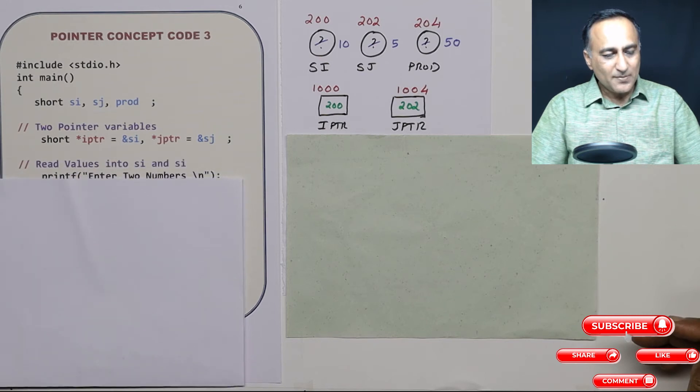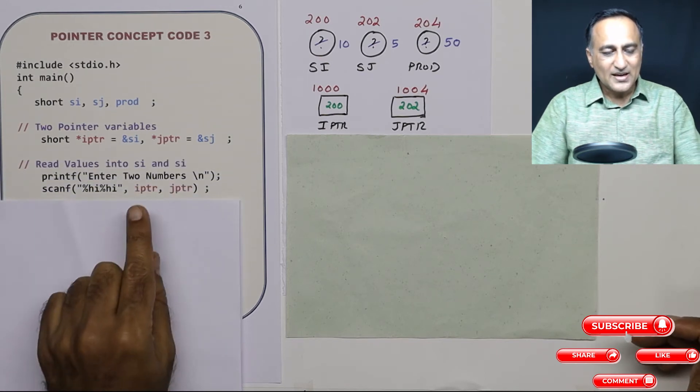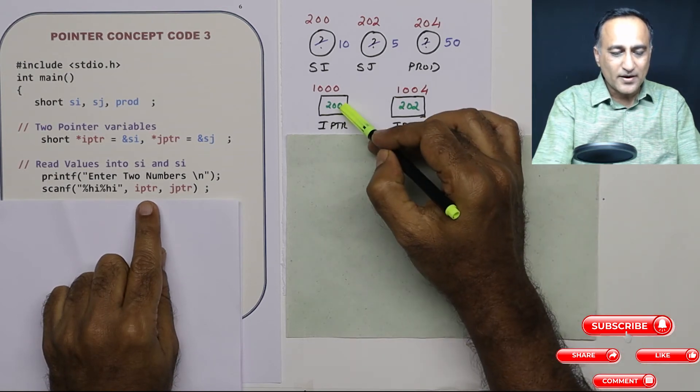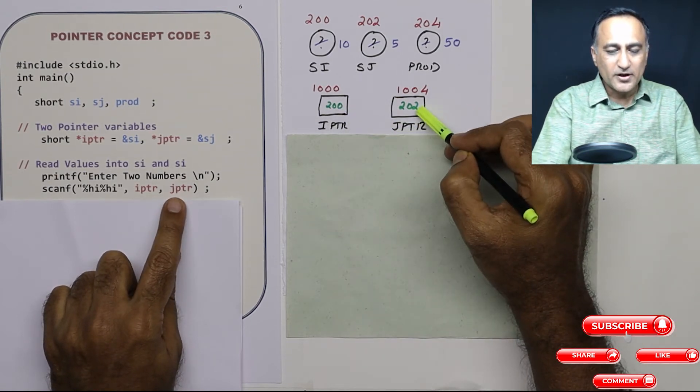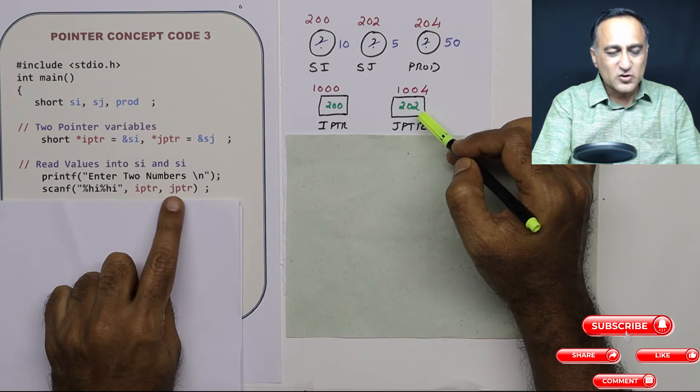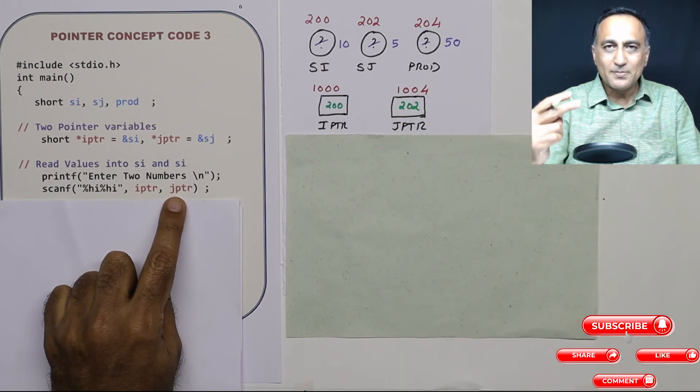Now next step, what I am doing is I am asking the user to enter two numbers. IPTR is 200, JPTR is 202. That means at these two addresses, two numbers will be stored.